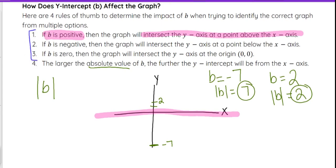So that can help with ruling out or eliminating answer choices, especially these first three can come in handy. If you know b is positive, you can rule out any graph that has a y-intercept that is a negative value below the x-axis or vice versa for negatives. Or if you know it's zero, then there's only one spot that it can cross the y-axis.